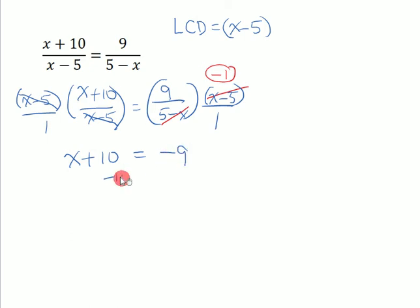Let's subtract 10 from both sides to find x. It looks like x is negative 19. We should check to make sure that replacing x with negative 19 does not give us 0 in the denominator. In this case, we do not get 0 in the denominator, so we're okay.